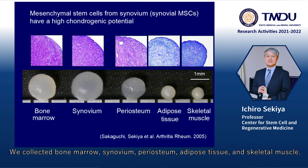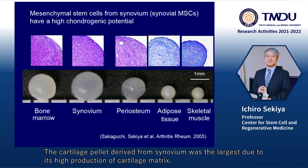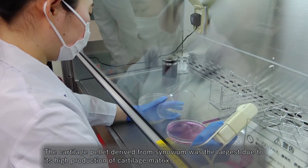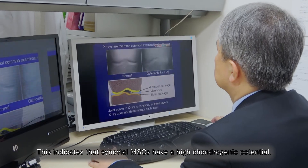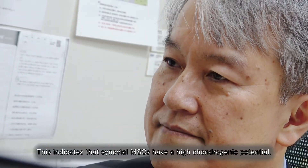We collected bone marrow, synovium, periosteum, adipose tissue, and skeletal muscle. We then prepared mesenchymal stem cells and differentiated them into cartilage pellets in vitro. The cartilage pellet derived from synovium was the largest due to its high production of cartilage matrix, indicating that synovial MSCs have a high chondrogenic potential.